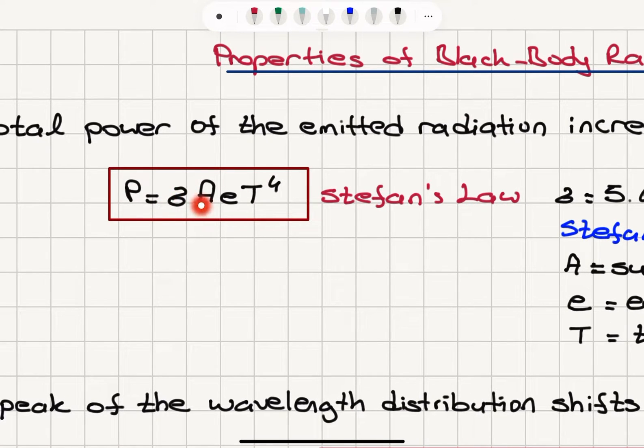P equals sigma A e T to the fourth. Stefan's constant sigma, the surface area A, emissivity times T to the fourth power.